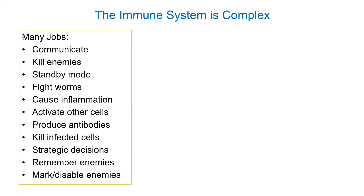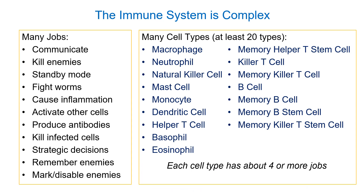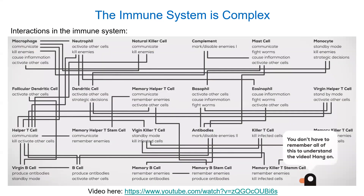I found a video on YouTube that really emphasizes how complex the immune system is. If you think about all the jobs the immune system has — killing many different types of pathogens, preventing cancer, body parts communicating, search and destroy functions — there's so many things going on. There are at least 20 different cell types, and each has multiple jobs. I'll try to post some good videos on the immune system to the Facebook group.